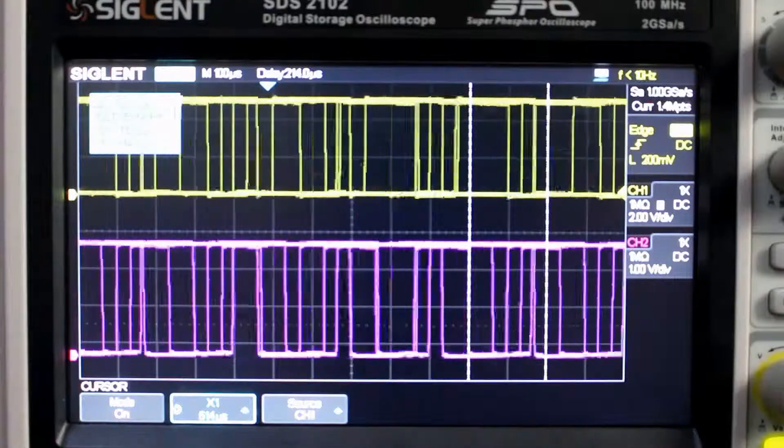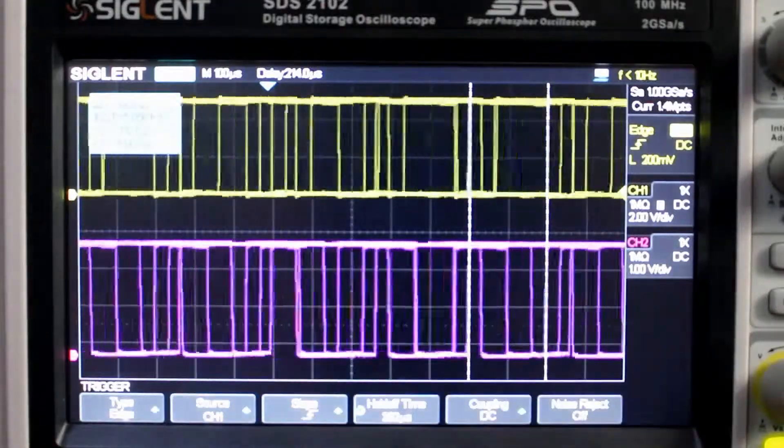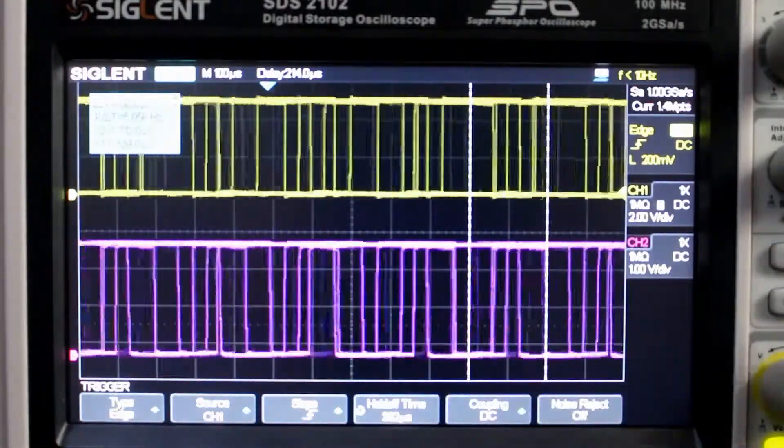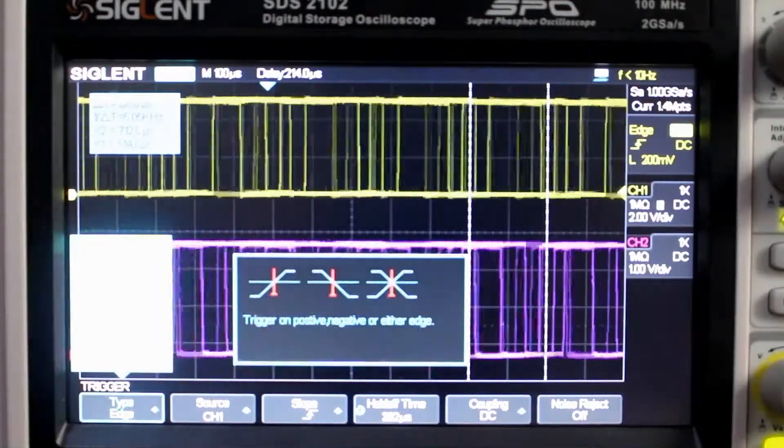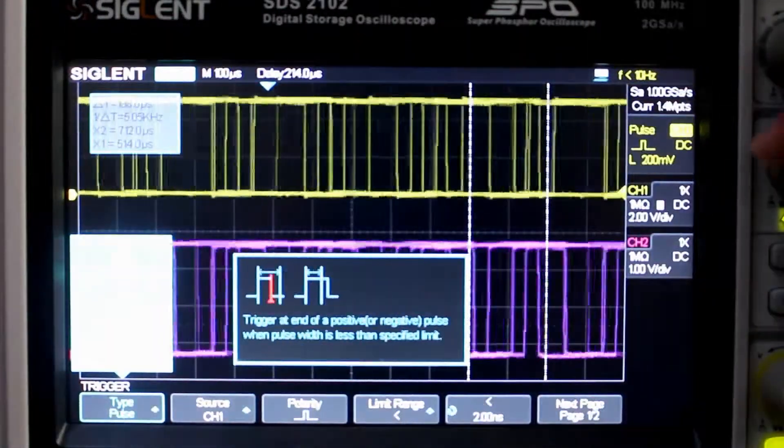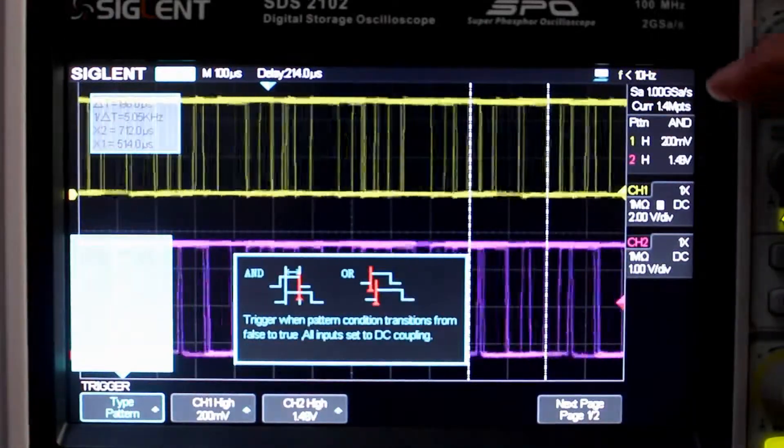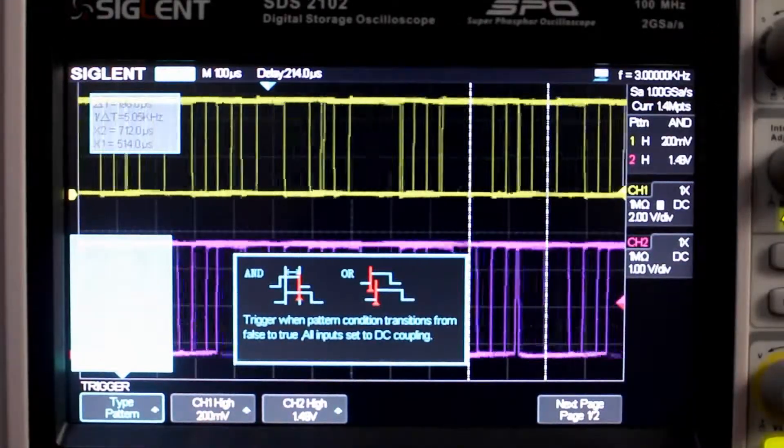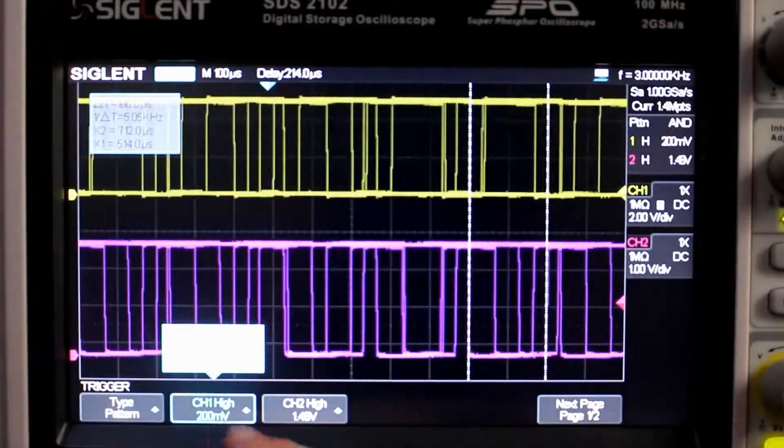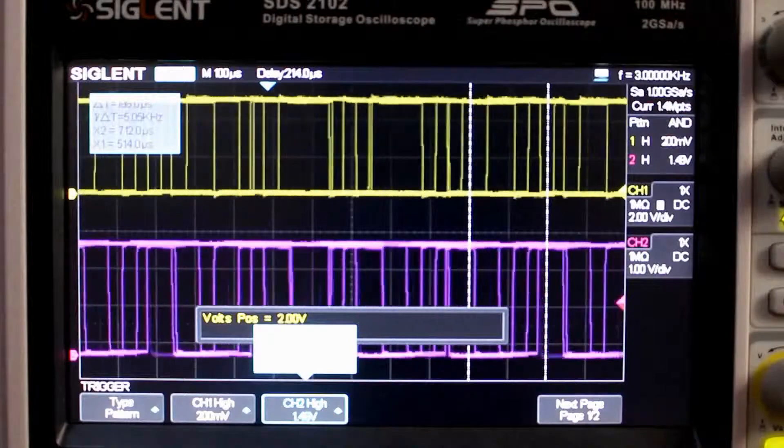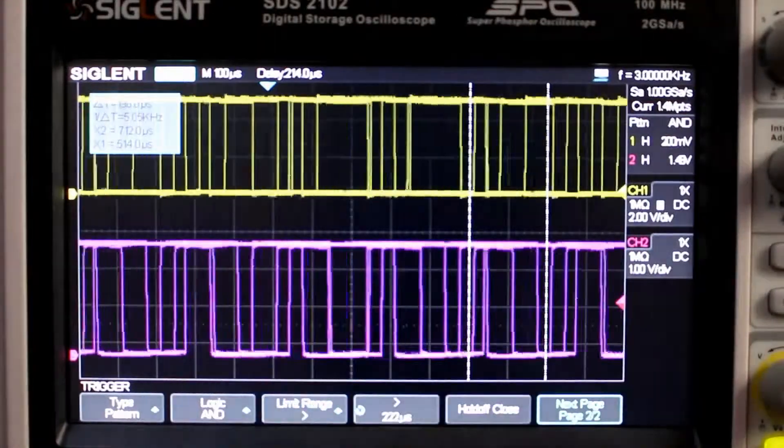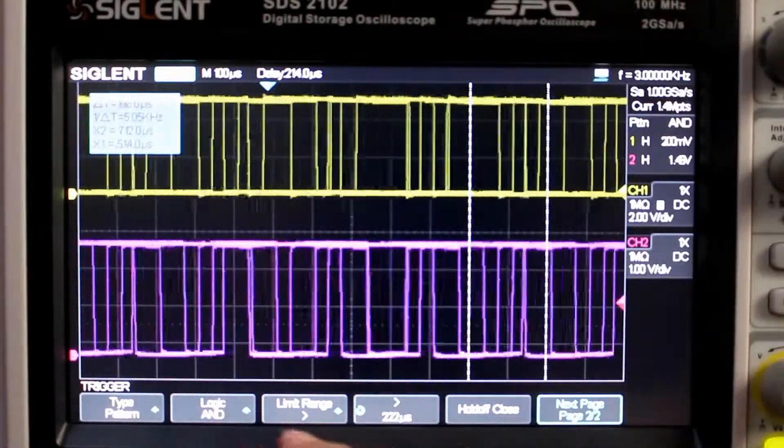So what we need to do is change a few settings. So let's go to our pattern trigger type. Okay, good. Channel 1, set it to high. Channel 2, set it to high. The logic AND, good.